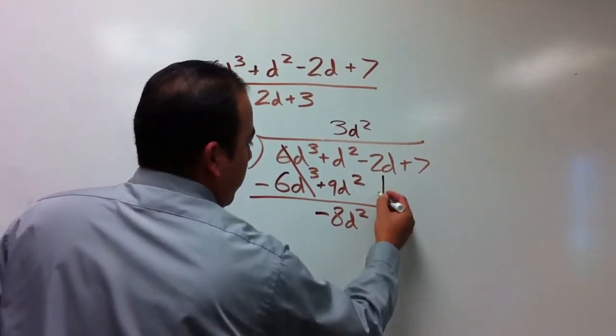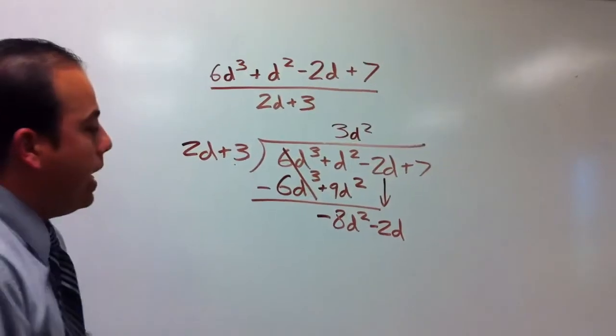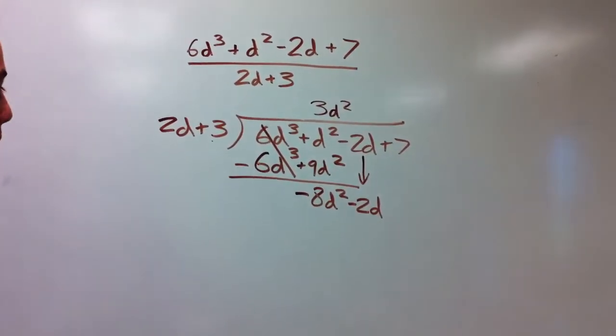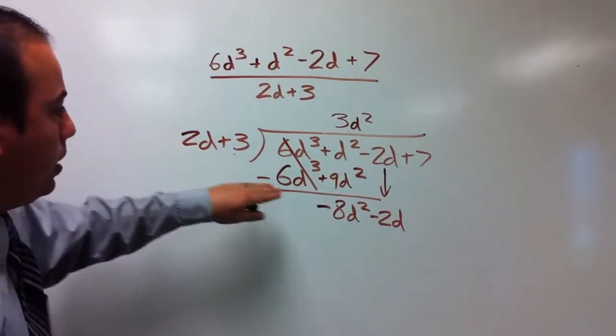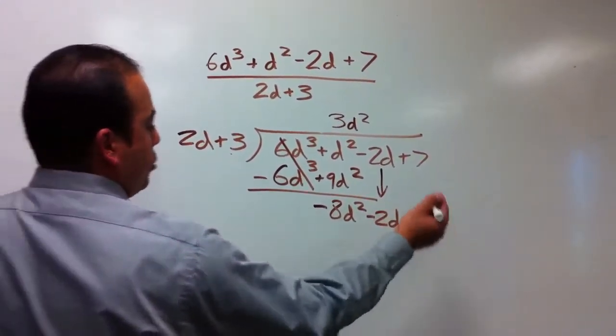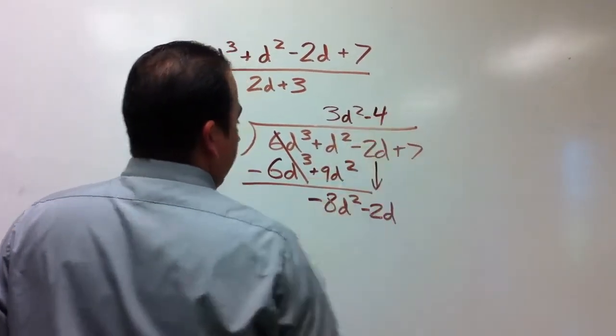Like division, we're going to drop our next number, which is -2d. Now we want to focus on getting rid of this -8d². So 2 goes into -8 four times, actually -4.